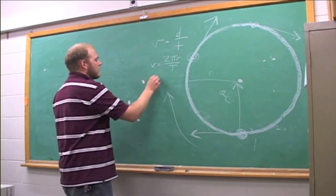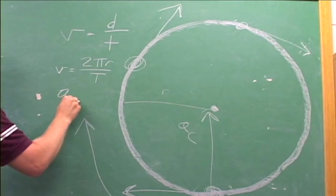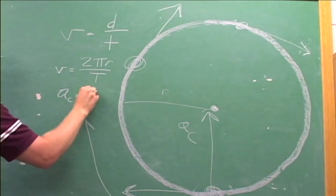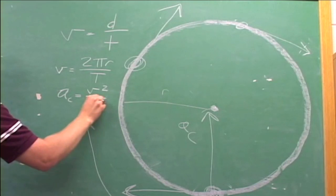The magnitude of this centripetal acceleration is equal to the instantaneous velocity squared divided by the radius.